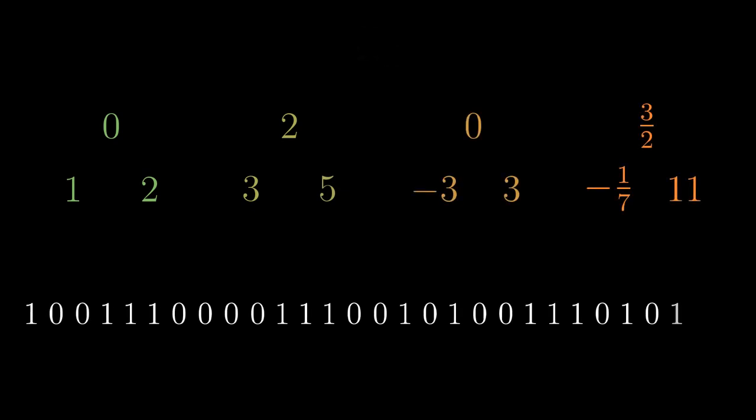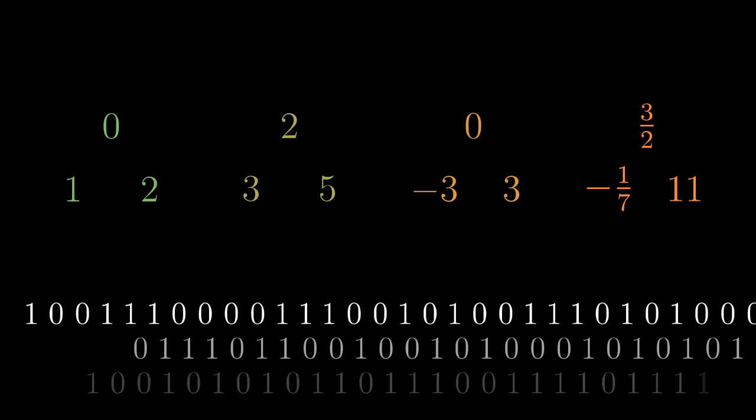In the last video, we showed several sets of size aleph-0: natural numbers, prime numbers, integers, rational numbers, and one bigger set—the set of all infinite sequences of zeros and ones. The current chapter is devoted primarily to this particular bigger size.